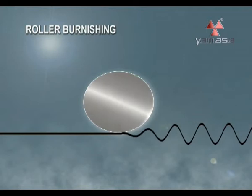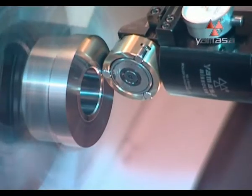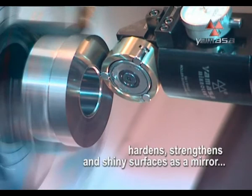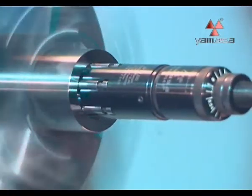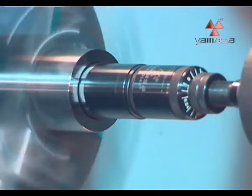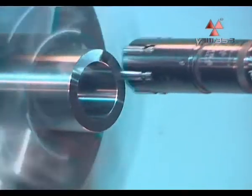Roller burnishing does not remove sawdust. It obtains surfaces as shiny as a mirror, strengthens and hardens surfaces by smoothing the roughnesses of those surfaces. At the same time, the desired size can be obtained easily and quickly by its calibration feature.